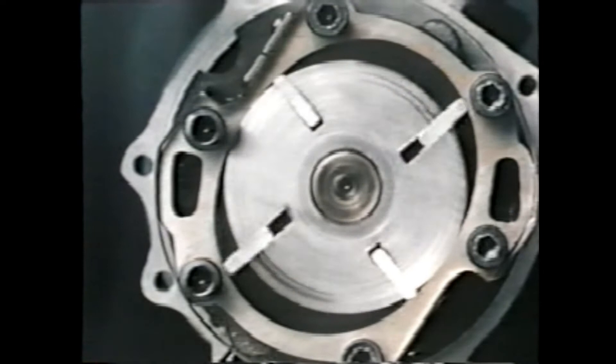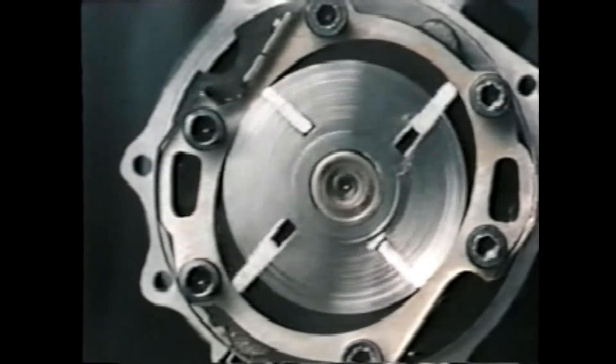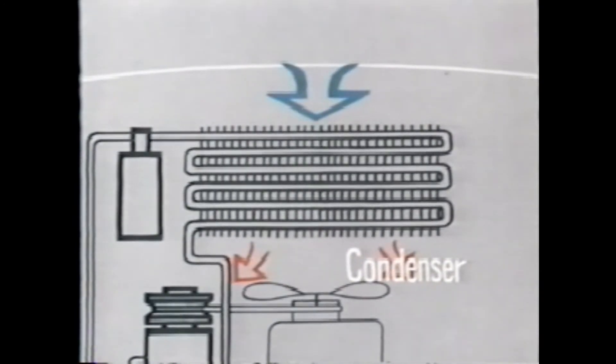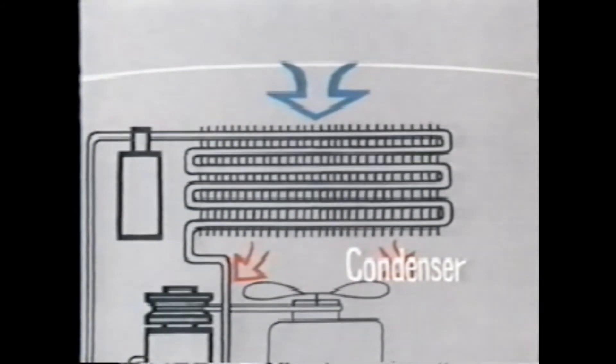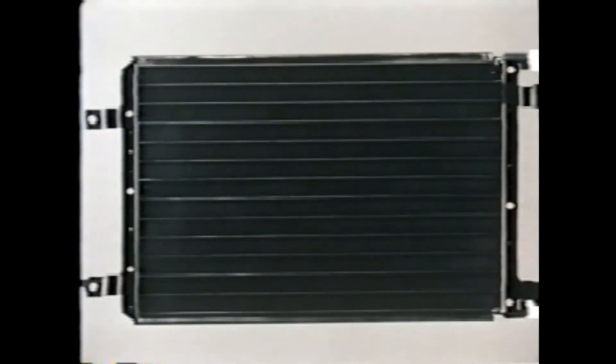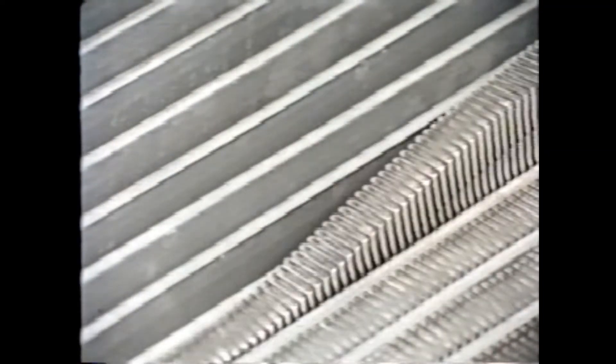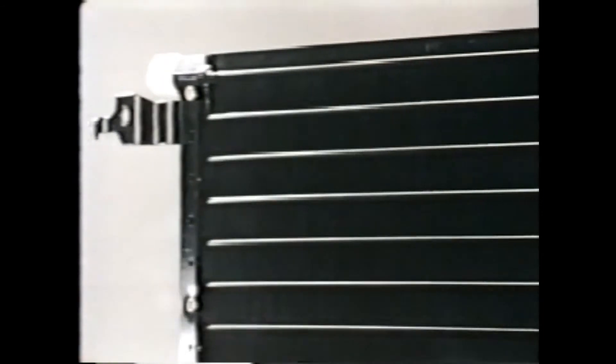The condenser is set in front of the radiator. The condenser for car air conditioner is air cooled by forced convection. Cooling efficiency is enhanced by fins attached to the tube. The condenser is a component that cools and liquefies the high temperature, high pressure refrigerant sent from the compressor.